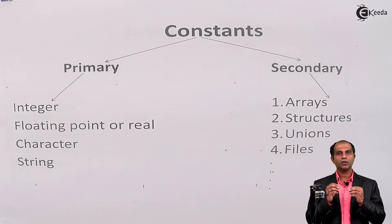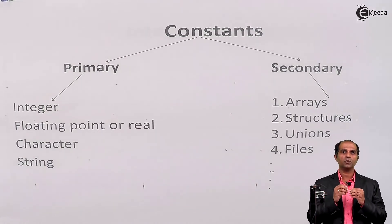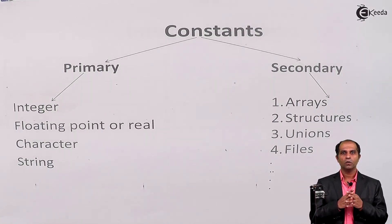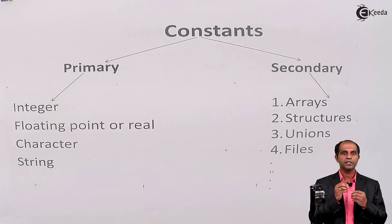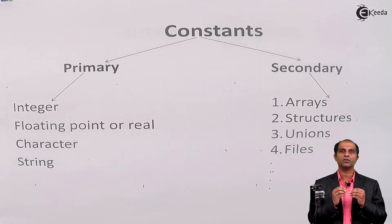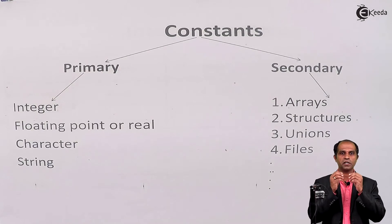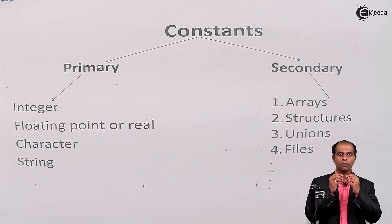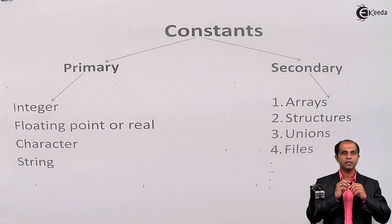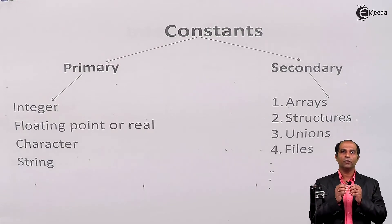When we provide an input or write a mathematical expression, we write some numbers and those numbers are nothing but constants. A quantity which does not change during the execution of a program — as a program proceeds, if the quantity does not change, we call that quantity a constant.